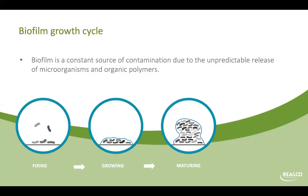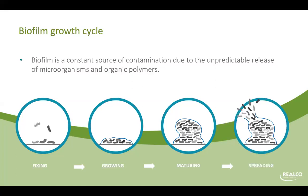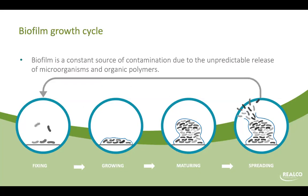The last phase is the spreading phase. The microorganisms inside the biofilm communicate with each other and when there are too many, they disseminate — they release fragments of biofilm or planktonic cells. This is why you have spreading: the biofilm releases some fragments or planktonic cells, which then start a new fixing phase in another location. It's a very dynamic structure.